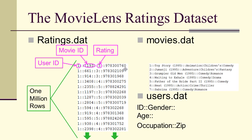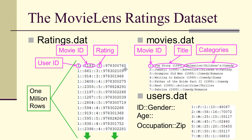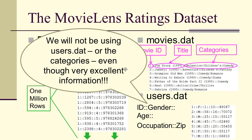The movies.dat data has a movie ID, the title of the movie, and the categories that the movie occupies. The user data has ID, gender, age, occupation, zip code, and things like that. We're not going to use the user data or the categories data — it's excellent information but we're going to keep things simple.